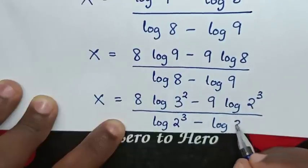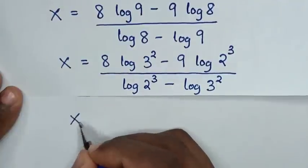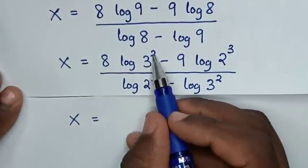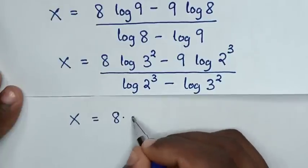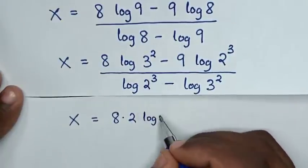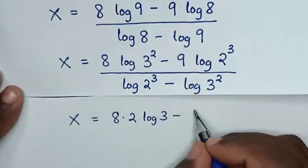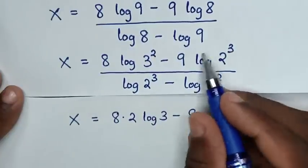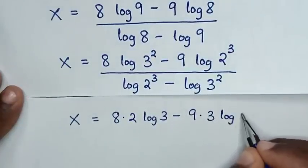Then it will be x is equal to: this power of 2 will move to the base, so it will be 8 times 2 log of 3, minus this power of 3 will move to the base, so it will be 9 times 3 log of 2.